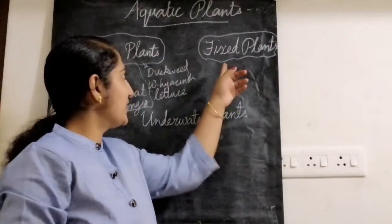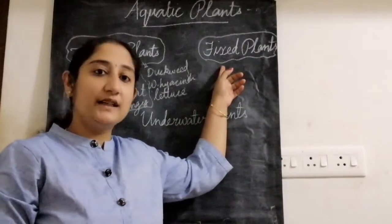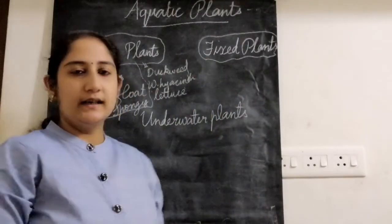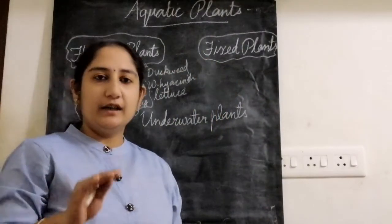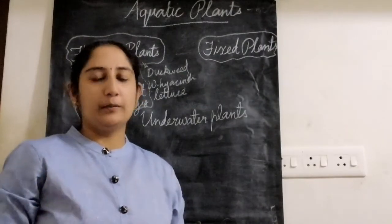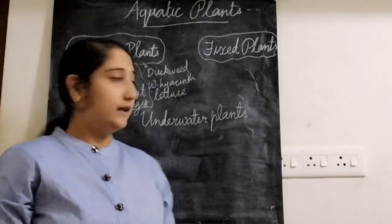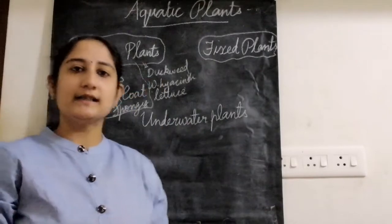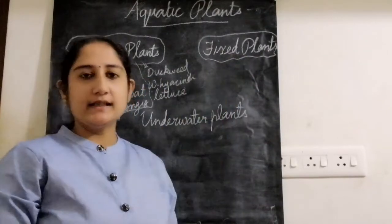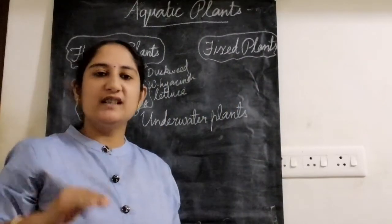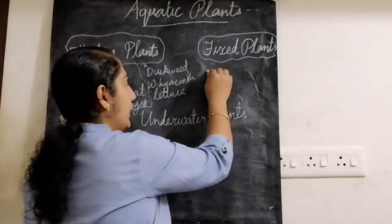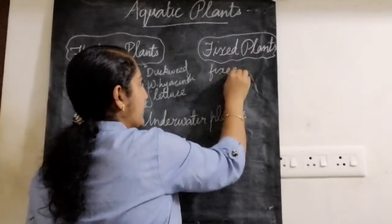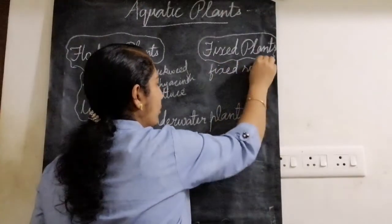Coming to the second type, which is called fixed plants. Fixed plants have their roots fixed to the bottom of the pond. Unlike floating plants where the roots float under the surface, in fixed plants the roots are fixed to the bottom.